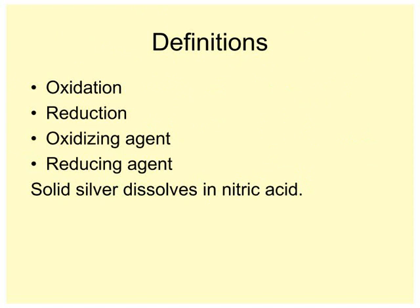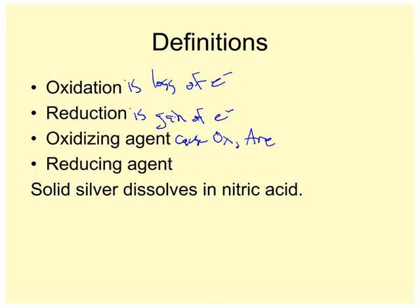So now we're refreshed in 5 minutes of fun. Definitions. Oxidation is loss of electrons. Reduction is gain of electrons. Oxidizing agents cause oxidation. They are reduced. And reducing agents cause reduction. They are oxidized.